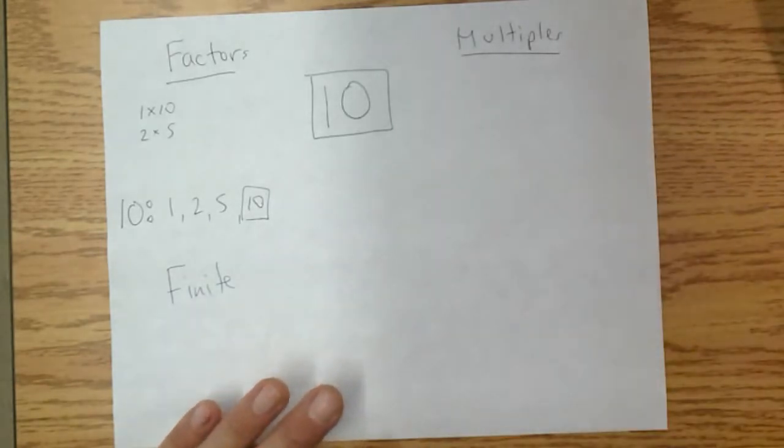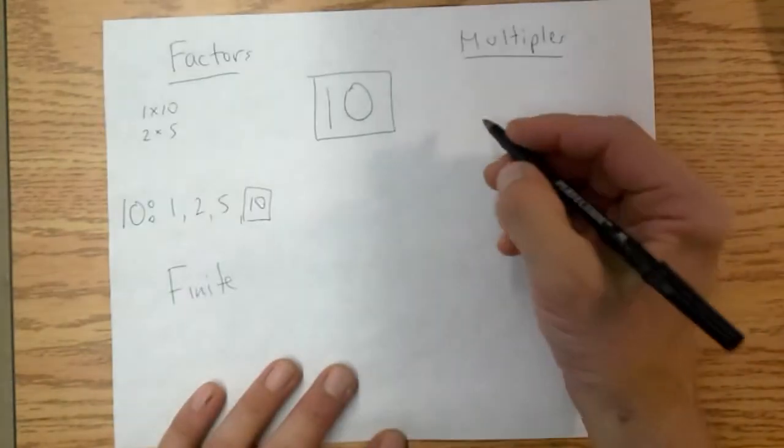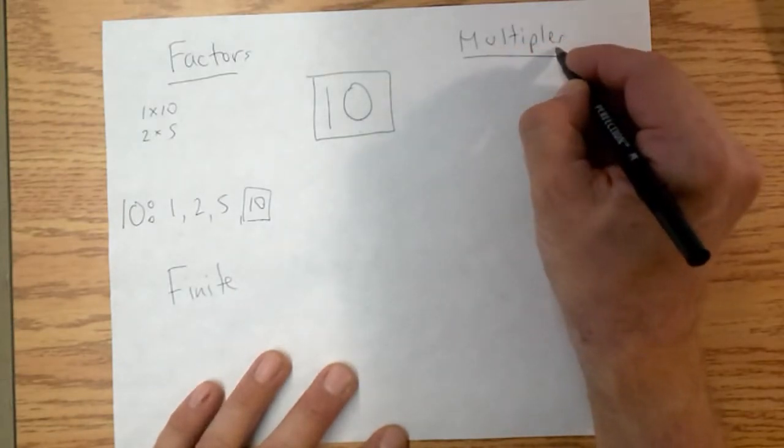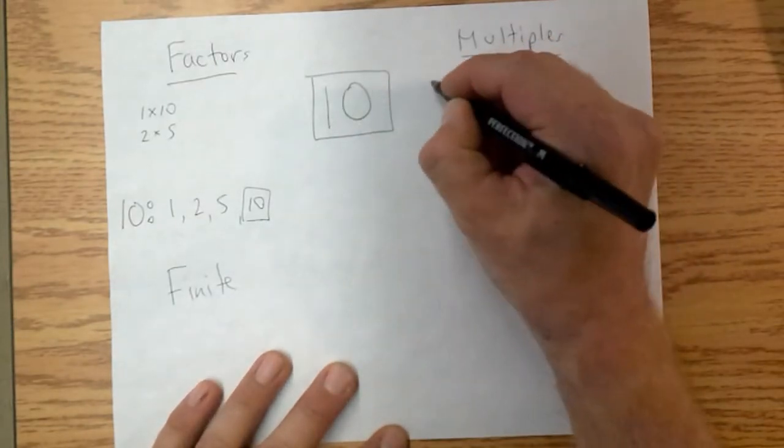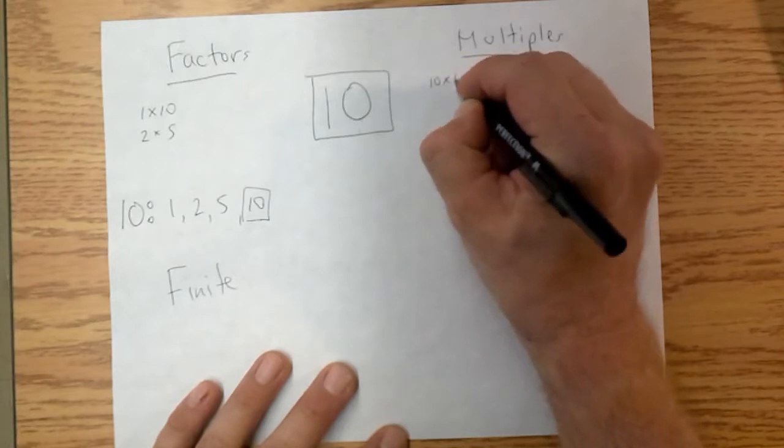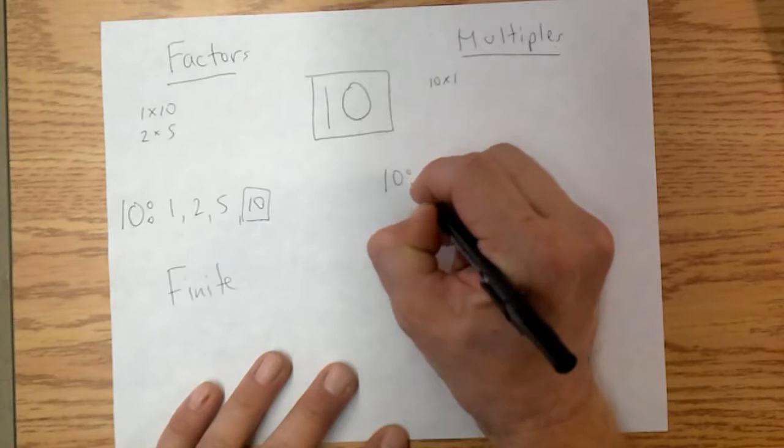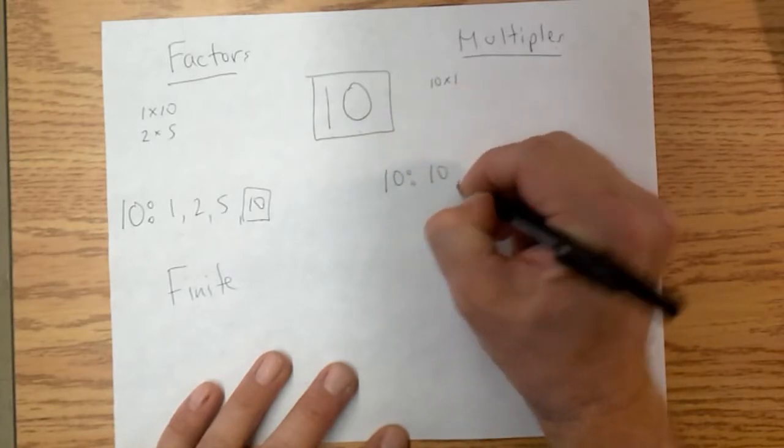Now for multiples, we go the other way. You think word multiplication is here. So you take that number and you simply multiply it by 1. So here we're going to list the multiples down here, the multiples of 10. 10 times 1, so 10.